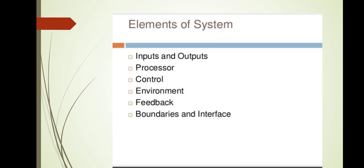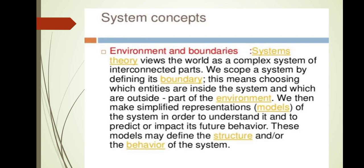Boundaries and interfaces define within the environment how the system performs and what elements affect or motivate the system. System concept: environment and boundaries. System theory views the world as a complex system of interdependent parts. We scope a system by defining its boundary — choosing which entities are inside the system and which are outside, part of the environment. We may then simplify the representation to understand and predict its future behavior. These models may define the structure and behavior of the system.